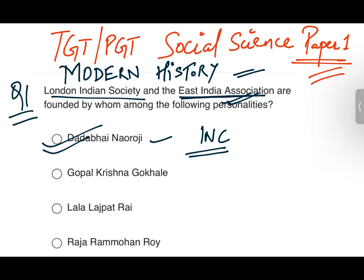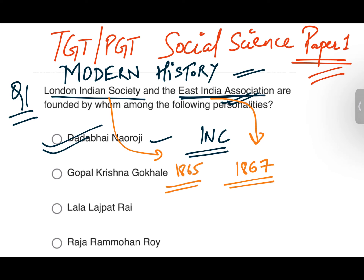Dadabhai Naoroji was a founding member of the Indian National Congress and became its president three times. You should remember this. He was also the first Indian member elected to the UK House of Commons. He founded the East India Association in 1867.